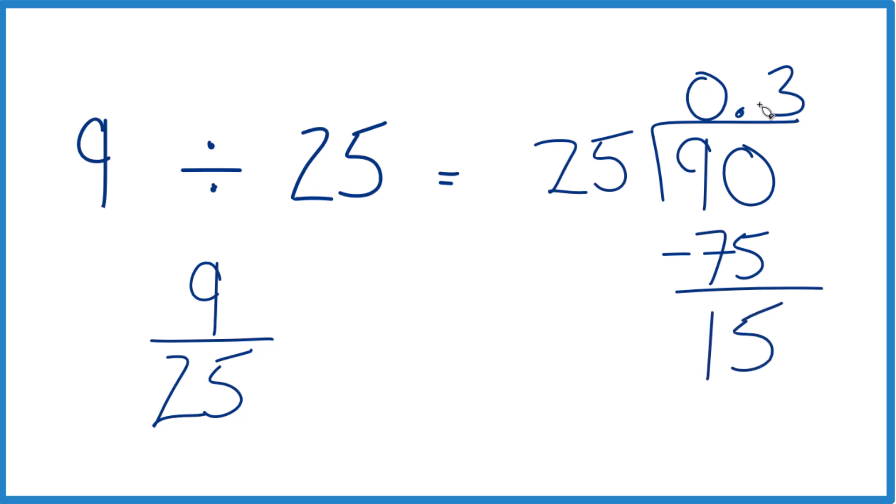25 doesn't go into 15, but if we moved over 1, we could add a 0 here. Now I know that 4 times 25, that's 100. 5 times 25 would be 125, and then 6 times 25, that would be the 150 there.